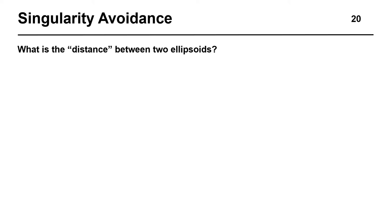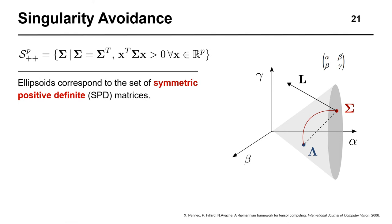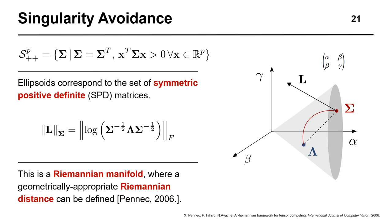So, what is the distance between two ellipsoids? Well, we know that ellipsoids correspond to the set of symmetric positive definite matrices, which form a convex cone in the vector space of symmetric matrices. Therefore, we know that we can't just take a Euclidean distance between two ellipsoids. However, we know that this set is a Riemannian manifold, where a geometrically appropriate distance can in fact be defined. On the right, we can see that the dashed straight line in Euclidean space does not represent the shortest path between two points on the manifold. The shortest path is in fact the red line, whose length is equal to the length of the tangent space vector L.